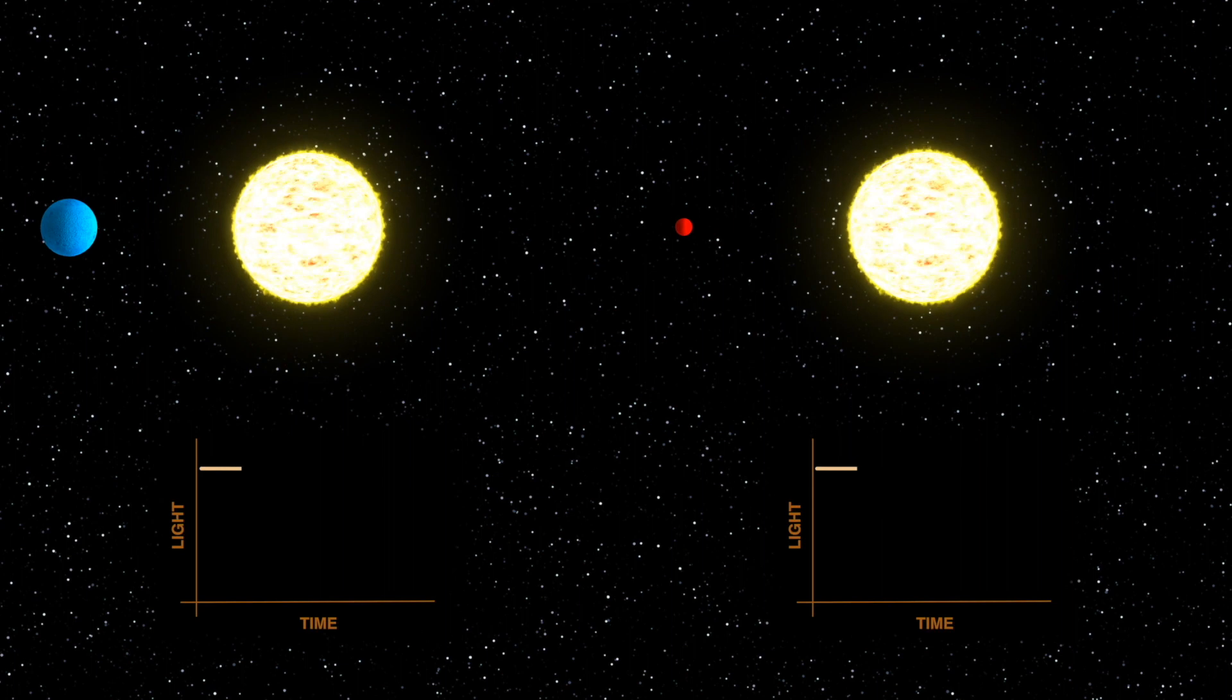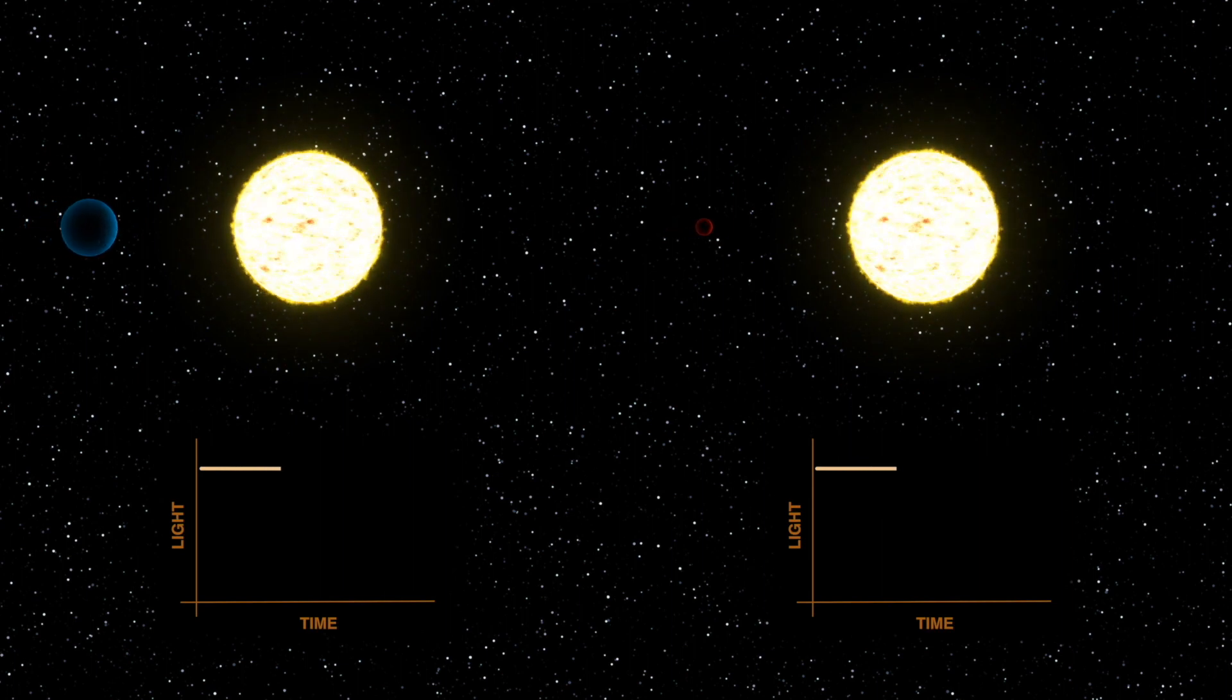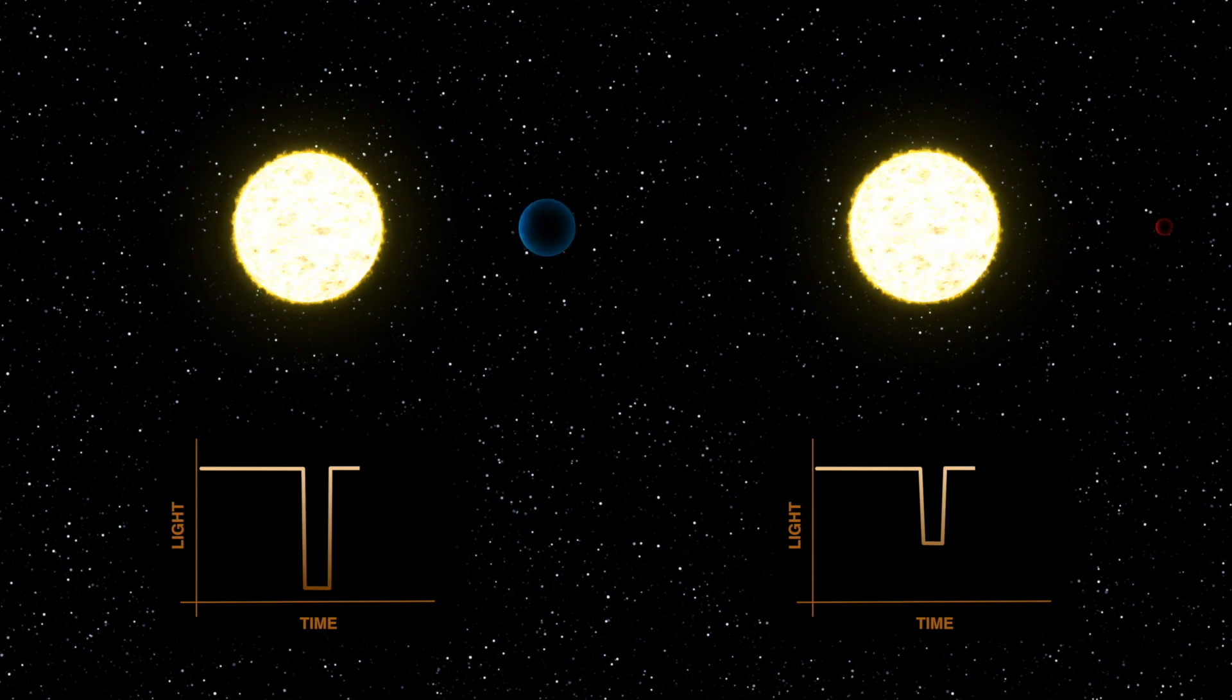The tiny dimming of nearby stars when planets around them block out their light is the way we've discovered thousands of new and strange worlds around other stars.